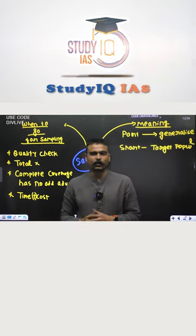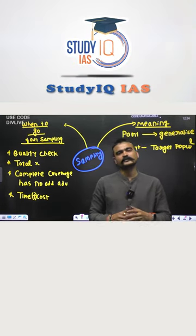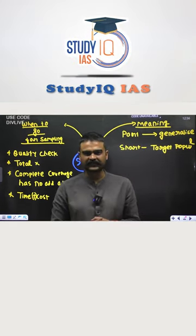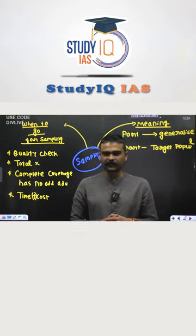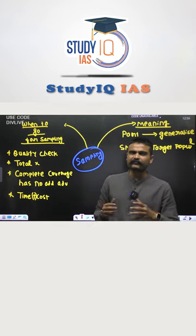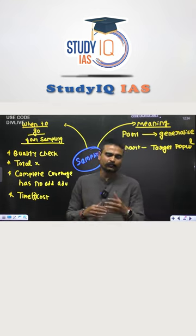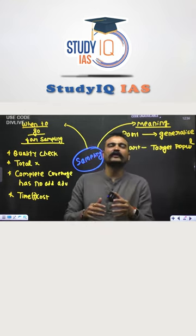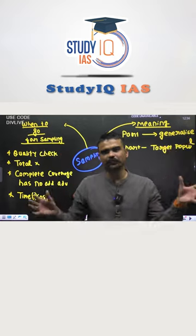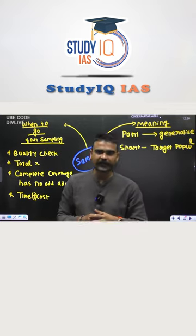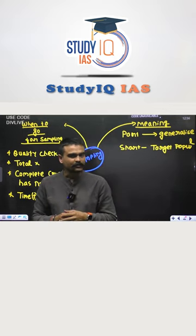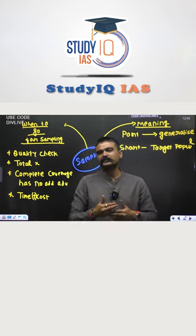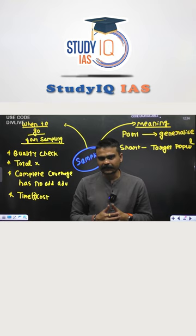Sampling is a very important topic as far as your sociology paper 1 chapter 3 is concerned. Sampling refers to where you study a given population in order to largely generalize your opinion for the entire society or the aspects which you are studying.